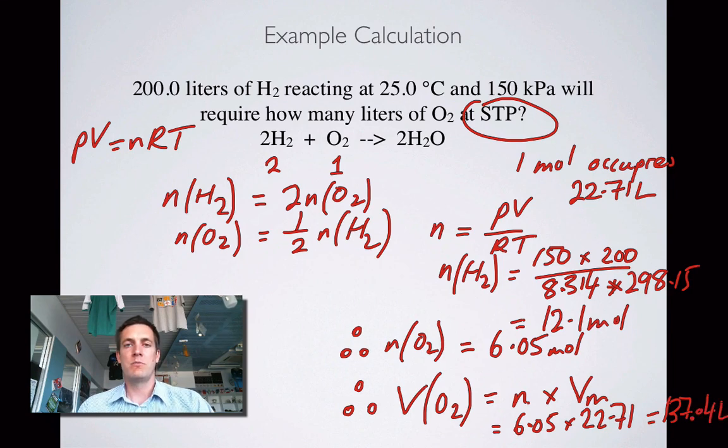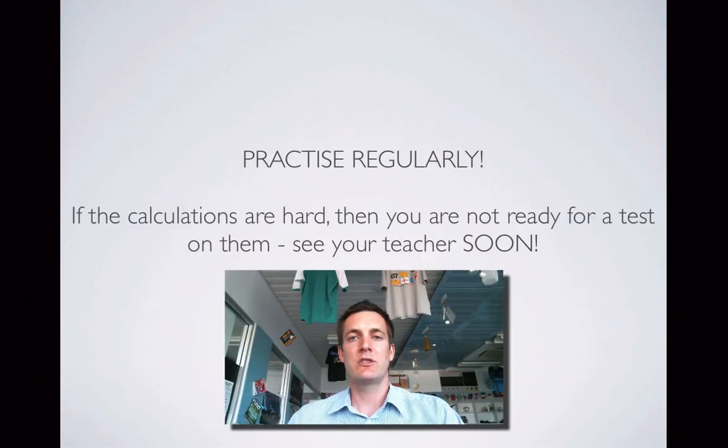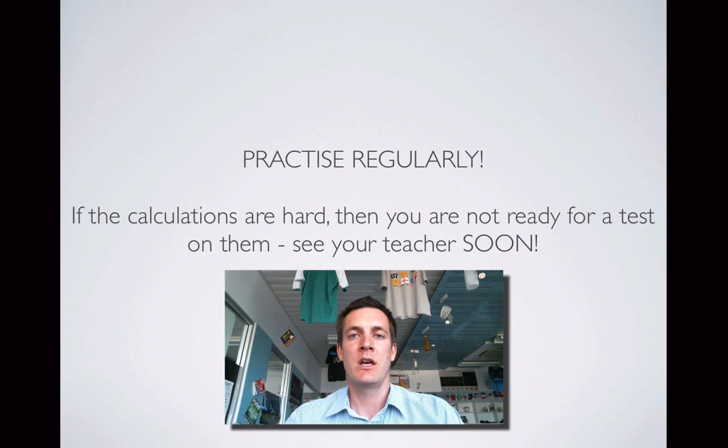That is more of a traditional stoichiometry question. We're relating the quantity of one thing to the quantity of another using a balanced equation, but we're using PV equals nRT in here. Well, there were three example calculations. As you know, practice is key with these things. There's no more about gases in this series of four films. The last three are all to do with percentages, so good luck with those.